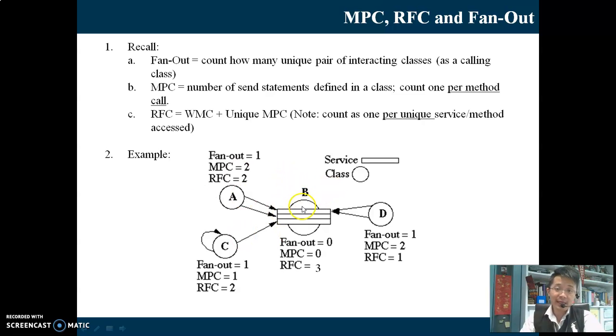Likewise, MPC is 0 because there are no outgoing methods. RFC, which contains WMC. In this case, there are 3 methods inside B plus 0 MPC of B, thus giving us value 3.